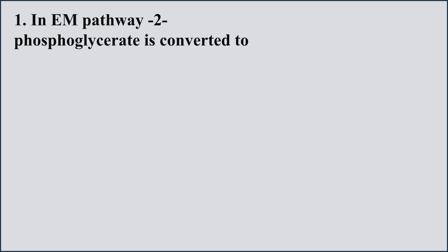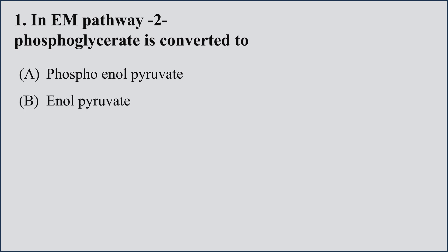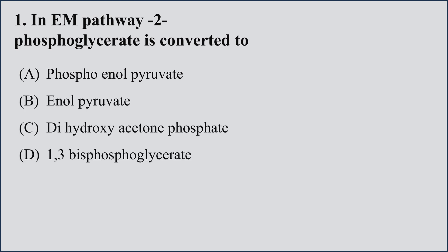Question number 1. In the Embden-Meyerhof pathway, 2-phosphoglycerate is converted to — they are asking about the glycolysis pathway. It is the second last reaction in which 2-phosphoglycerate is converted into: A) phosphoenolpyruvate, B) enolpyruvate, C) dihydroxyacetone phosphate, D) 1,3-bisphosphoglycerate.